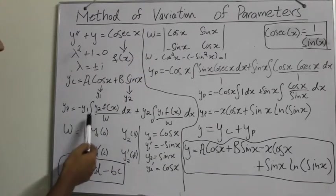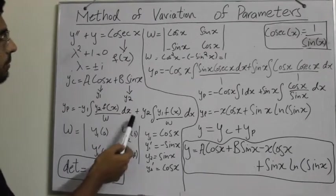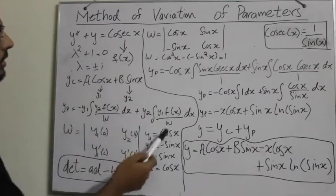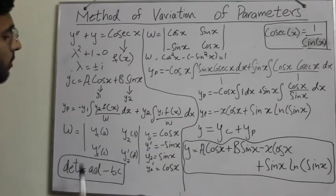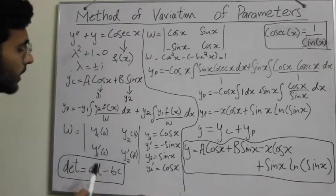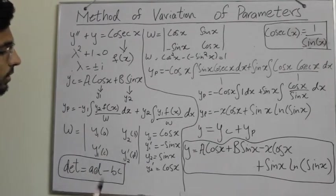Minus y1 integral y2 f of x over omega dx plus y2 integral y1 f of x over omega dx. So now what is omega? We can find omega while constructing a 2 by 2 matrix: y1, y1 dash, y2, y2 dash.